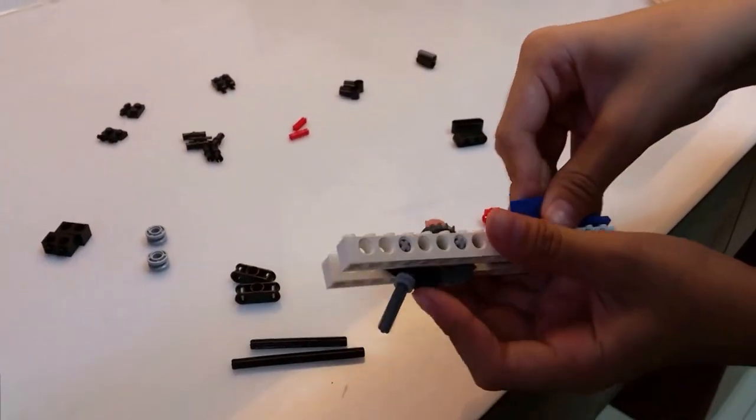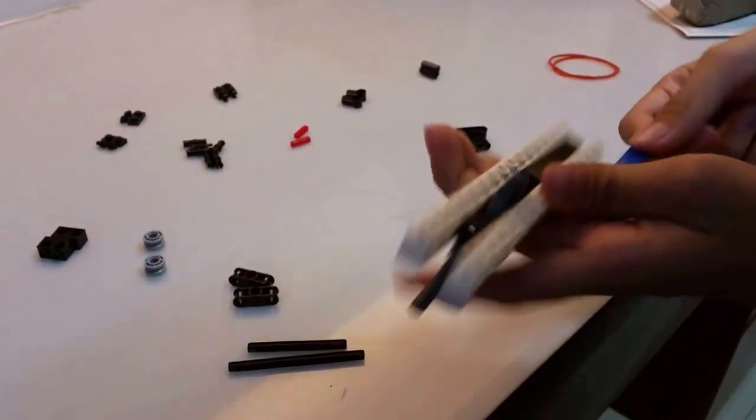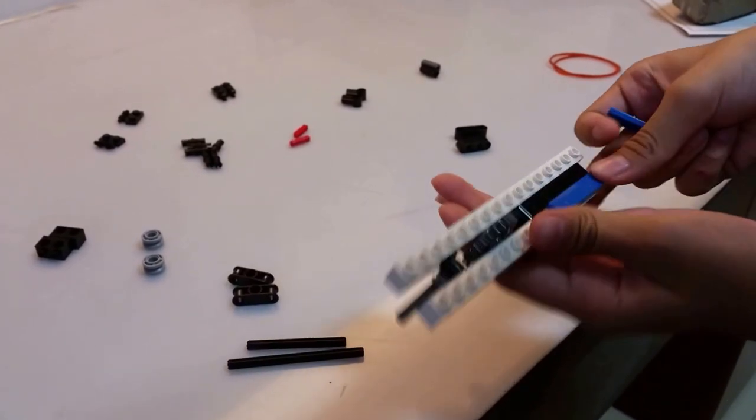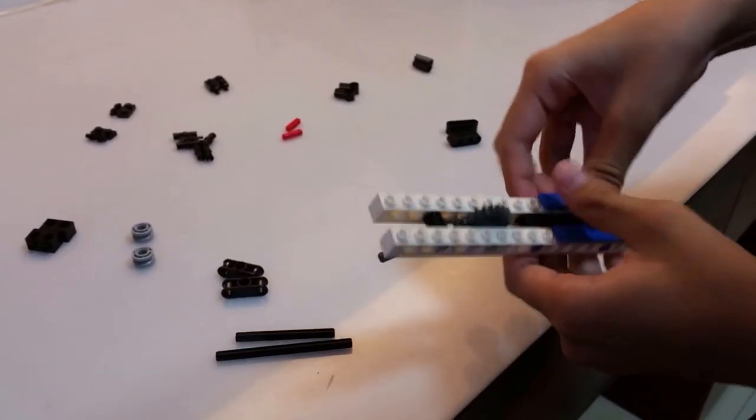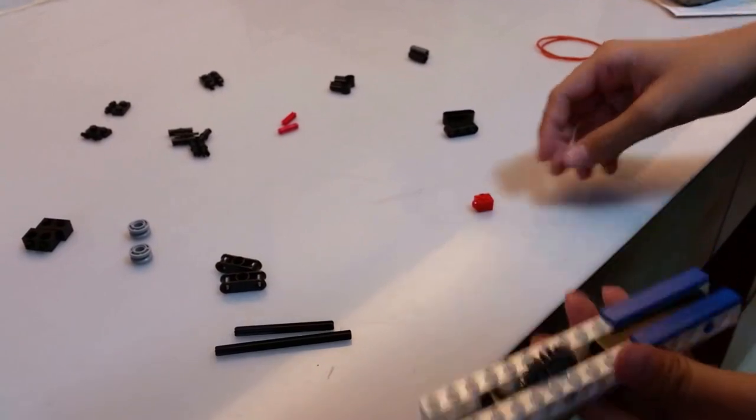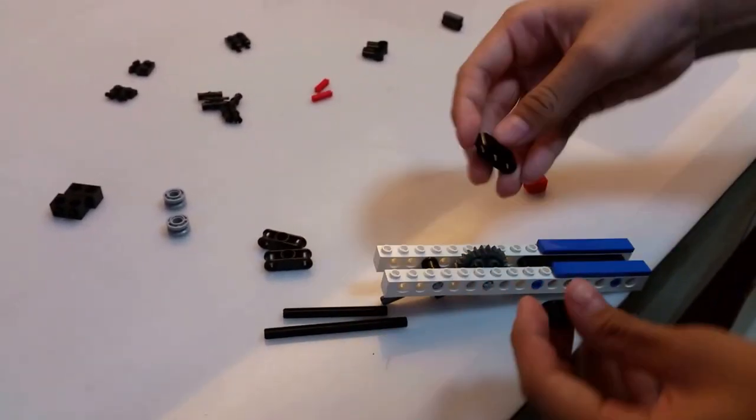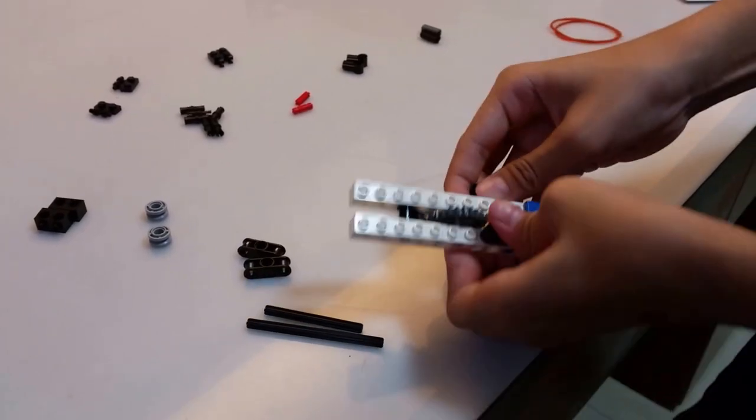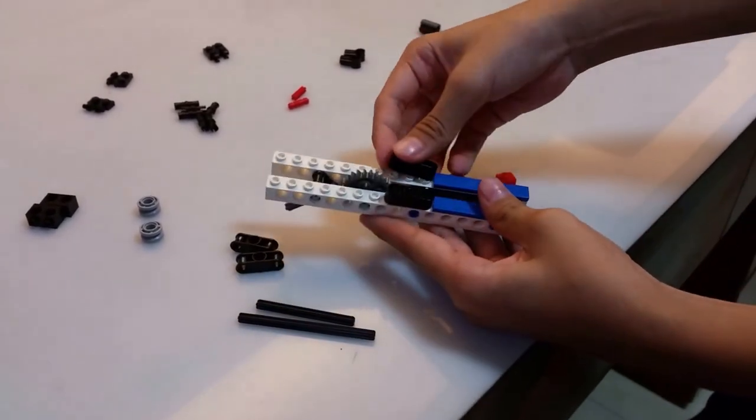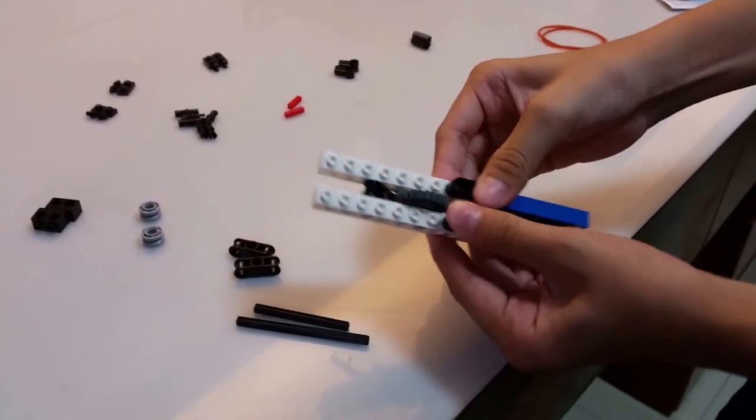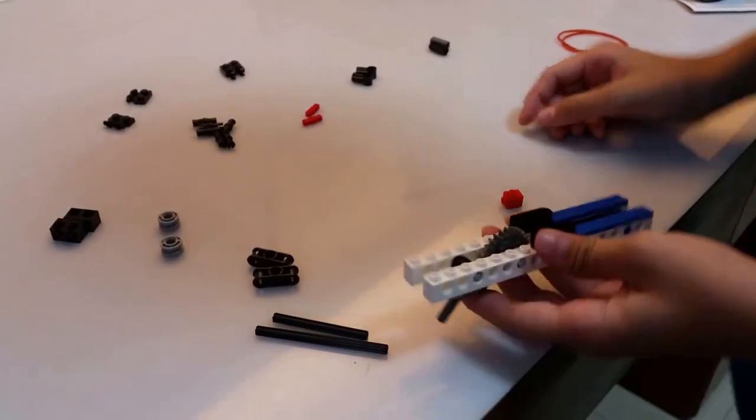Next you're going to take the smooth pieces and lay them down at the front like this. Now you're going to take these pieces here and tuck them over here right behind the pieces just like that.